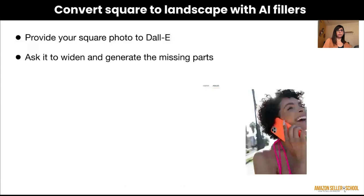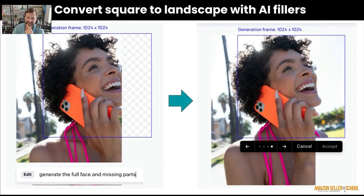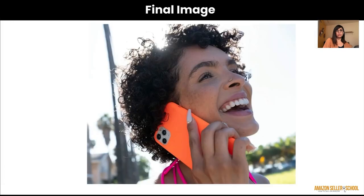Here's another example of how I converted a square image to a landscape with AI fill. I uploaded a square photo to DALL-E and asked it to widen and generate the missing parts. This woman's face was actually cut off in half, and it completed the image — it figured out what was missing and the ambience of the background and expanded it out very beautifully. Looking at it quickly, it looks really nice.